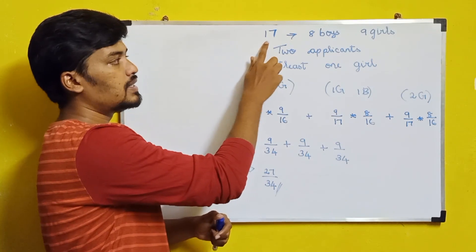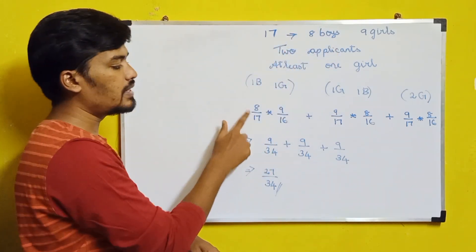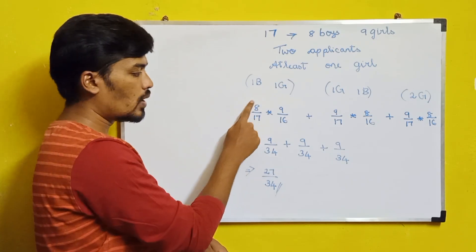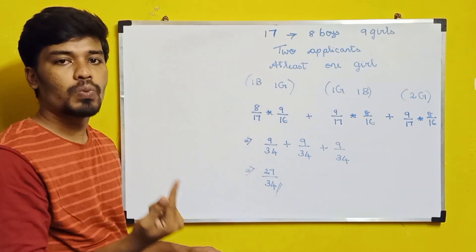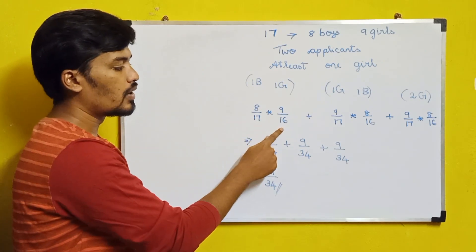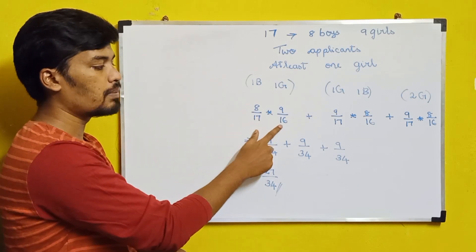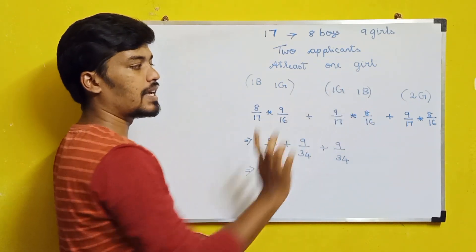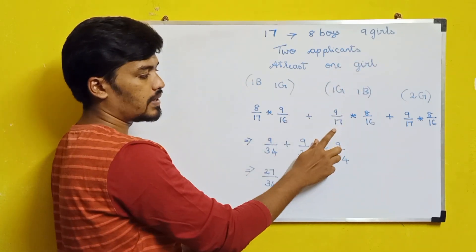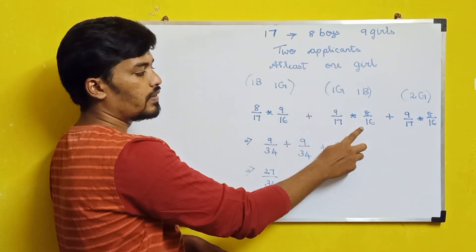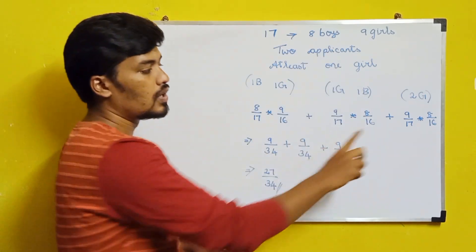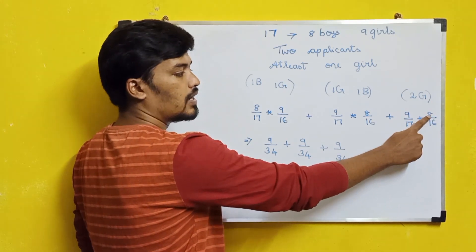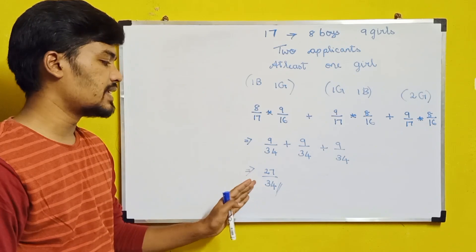For event one (boy then girl): 8/17 × 9/16. For event two (girl then boy): 9/17 × 8/16. For event three (girl then girl): 9/17 × 8/16 — since after selecting one girl, the remaining count is 16. If you solve this equation you will get the answer as 27/34. So the probability for this question is 27/34.